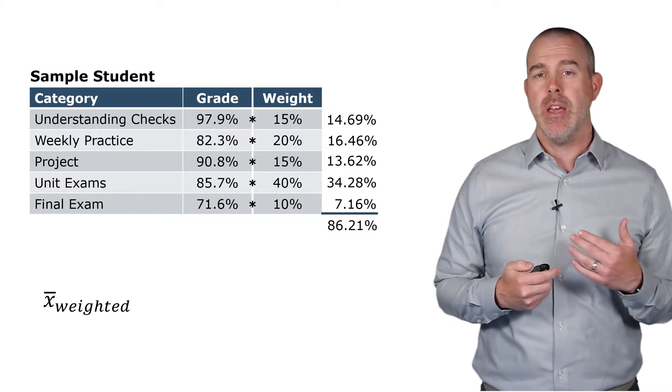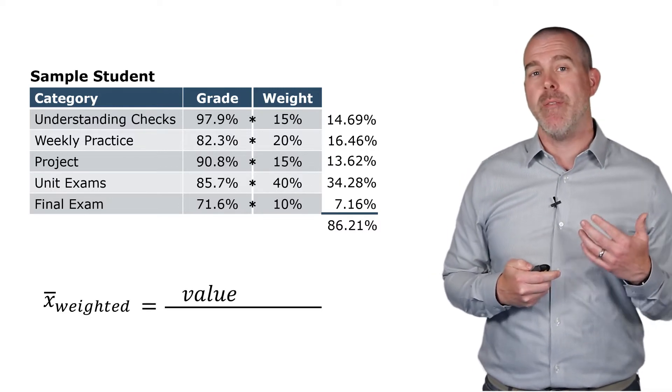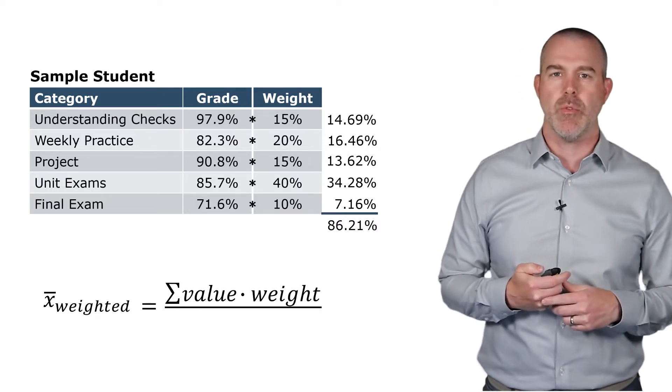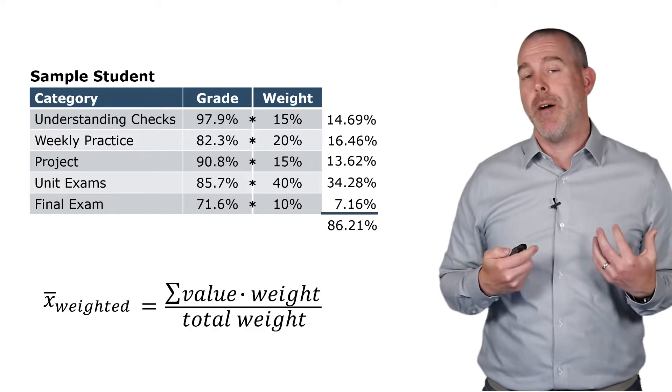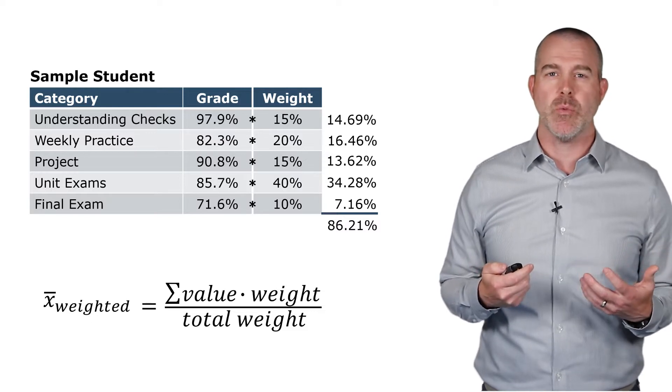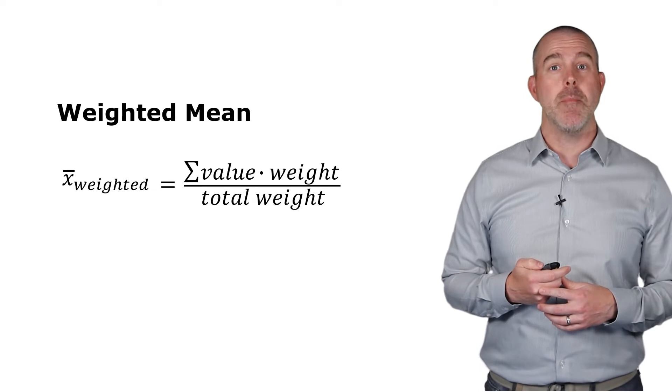We could say X bar, the sample mean, with a subscript of weighted. And what it means is we add up all of the values times their weight. That's the Greek letter sigma there for sum. And then we divide by the total weight. Now in this particular case, the total weight was 100%. So we didn't end up dividing by anything because we would just be dividing by 1. But that is the weighted mean.